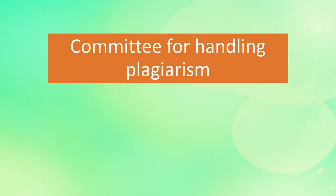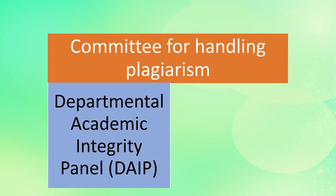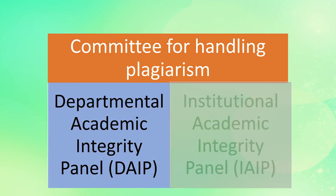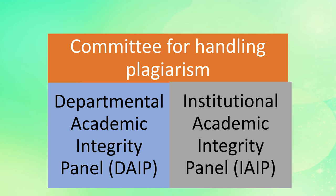To handle plagiarism, UGC regulations suggest that certain committees should be formed in higher education institutions. Two types of committees have been proposed. One is the Departmental Academic Integrity Panel (DAIP), which should ensure plagiarism-free research work and academic integrity at the departmental level. At a larger level, an Institutional Academic Integrity Panel (IAIP) can also be established. The DAIP can submit its report to the IAIP, and the IAIP will go ahead with the norms established by the institution.